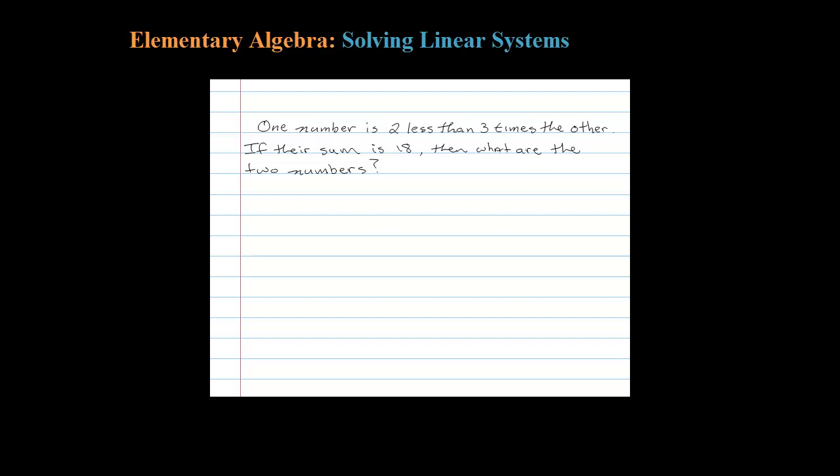One number is two less than three times the other. If their sum is 18, then what are the two numbers? This is the section where we are allowed to have two variables, so let x equal one of the numbers, and y is the other.